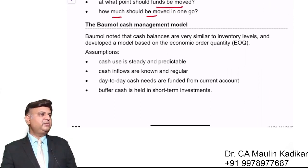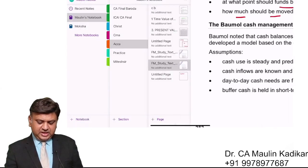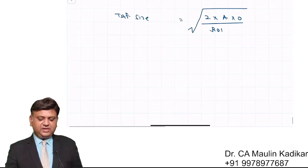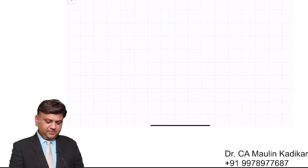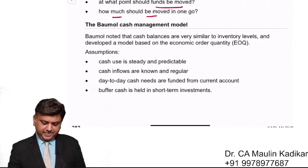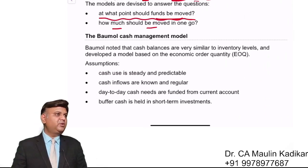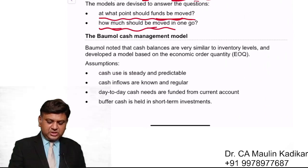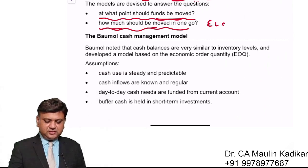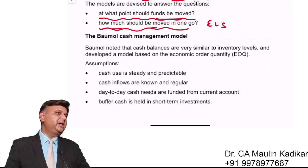Basically, what happens in Baumol's model? We assume that the requirement of cash is evenly spread throughout the year. At what point in time should it be moved? The answer is very simple. How much amount — what should we do, similar to economic lot size? After Baumol's model, there will be another model called the Miller-Orr model.